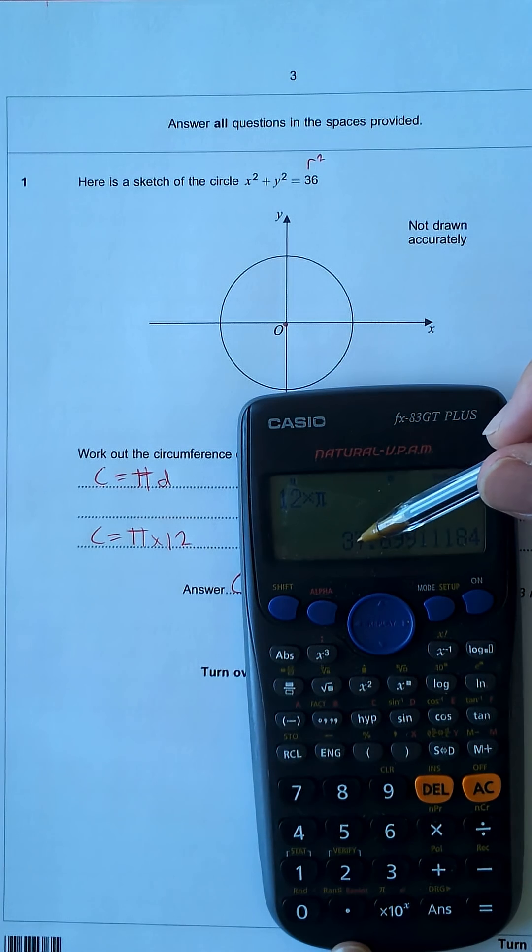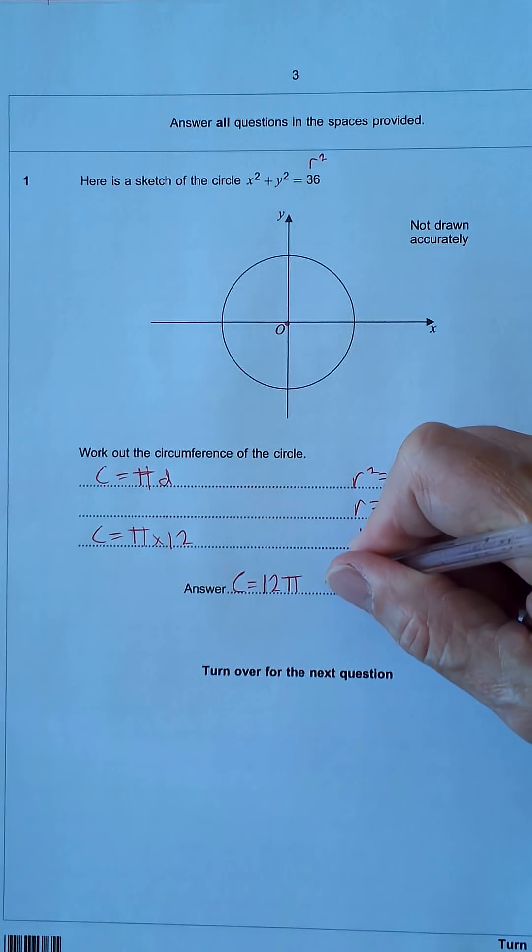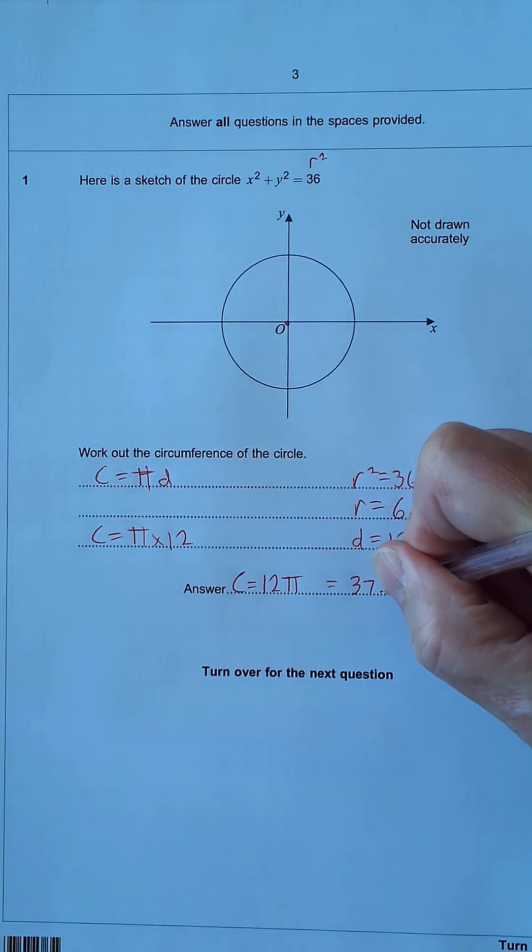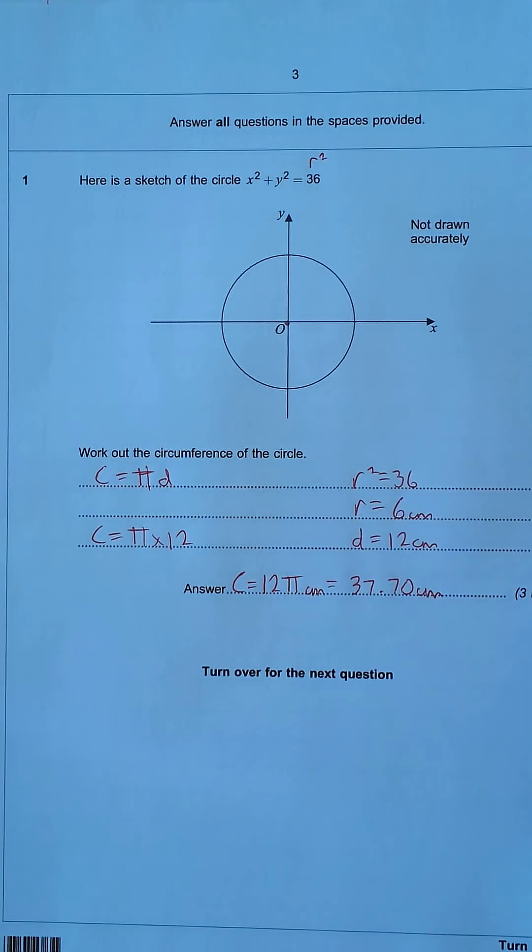Press the SD button. I'm going to round this off to four significant figures because it doesn't say on the question paper, so I'm going to be a bit more cautious. 37.70 equals 37.70 centimetres or 12 pi centimetres.